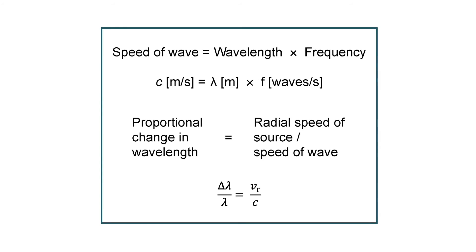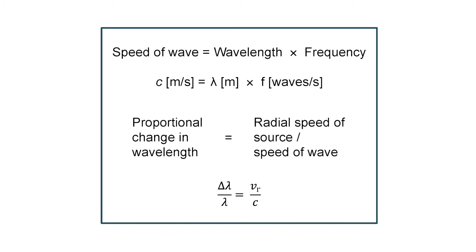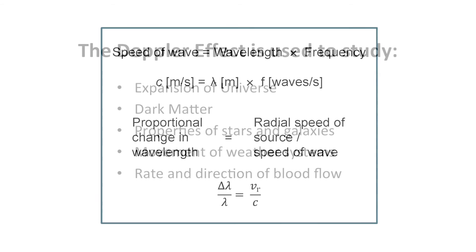The Doppler effect can be described quantitatively using sound as an example. Recall the relation between the speed of sound, its wavelength, and frequency. The Doppler equation relates the proportional change in wavelength or frequency — the pitch of sound — to the radial speed of the source relative to the observer, compared with the speed of sound. By measuring the change in pitch or wavelength and knowing the rest pitch or wavelength, it's possible to determine the relative speed of the source. That's the beauty of the Doppler equation.